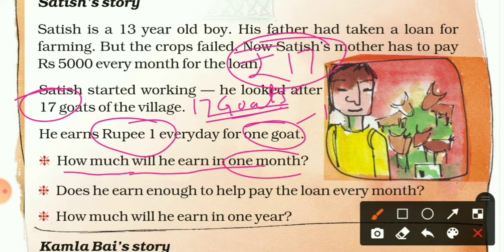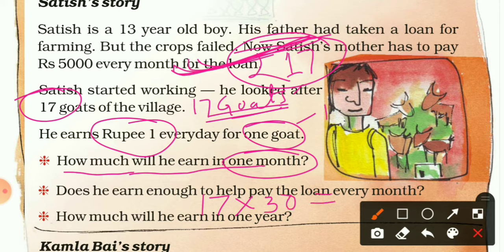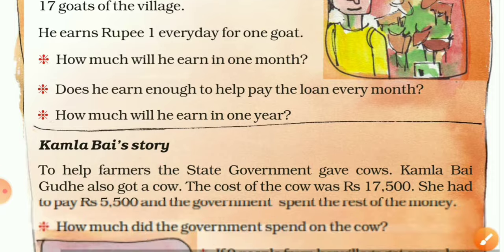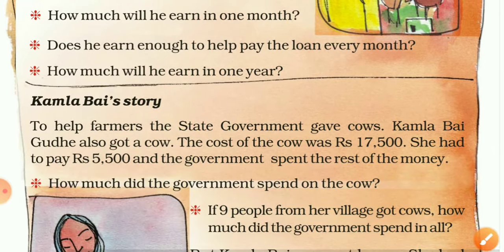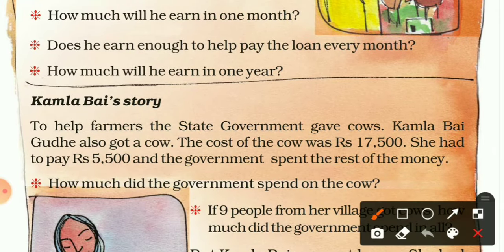How much will Satish earn in one month? In one day he is earning seventeen rupees, and one month means thirty days, so we multiply: 17 × 30. Using the table of seventeen: 17 × 3 = 51, so 17 × 30 = 510 rupees in one month.